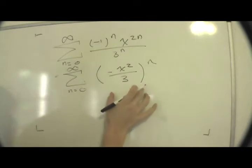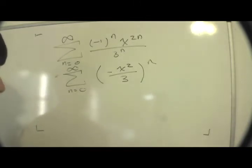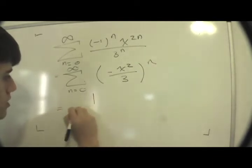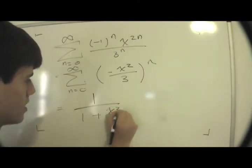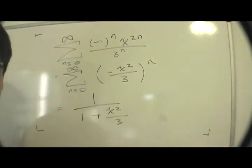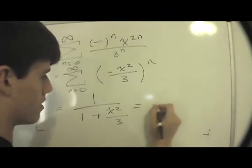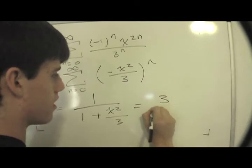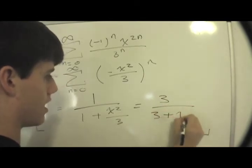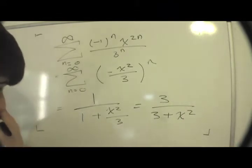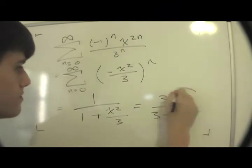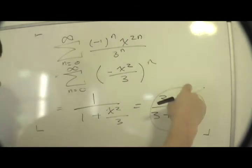And if you know what the geometric series formula is, how to solve them, if not look at other videos. But this thing should be 1 divided by 1 plus x squared divided by 3. Or this thing is equal to 3 divided by 3 plus x squared. So that's the first fact to remember.